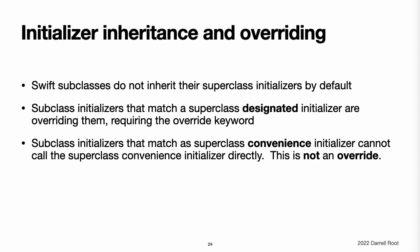Initializer inheritance and overriding. Unlike subclasses in Objective-C, Swift subclasses do not inherit their superclass initializers by default. Swift's approach prevents a situation in which a simple initializer from a superclass is inherited by a more specialized subclass and is used to create a new instance of the subclass that is not fully or correctly initialized. Note: superclass initializers are inherited in certain circumstances, but only when it is safe and appropriate to do so. For more information, see Automatic Initializer Inheritance below.